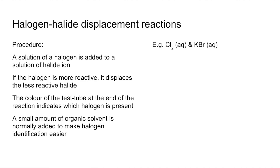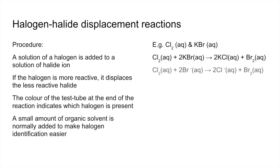For example, chlorine with KBr: chlorine is more reactive so it will displace the bromine. There's the full equation and the ionic equation for that redox reaction. Chlorine starts at oxidation state zero as the element and goes to −1, so that's reduction. Bromine starts at −1 in Br− and goes up to zero, so that's oxidation. We have both reduction and oxidation occurring in the same reaction — hence redox.